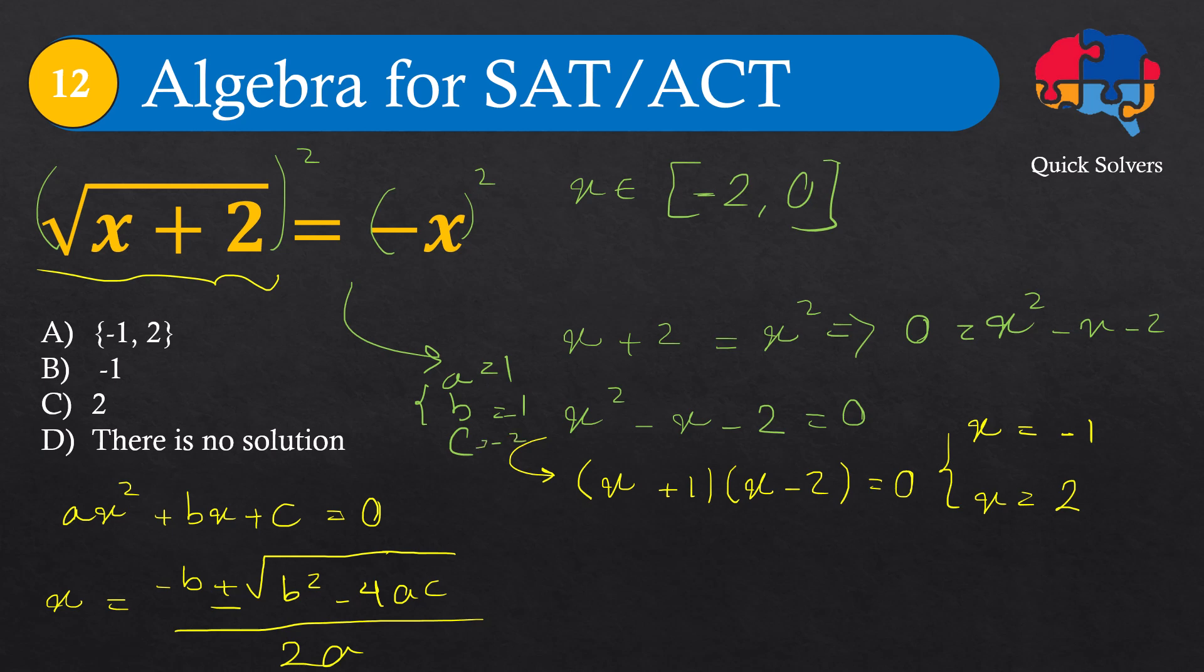Substituting these values, we get minus b which is 1, plus or minus the square root of b squared which is 1, minus 4 times a times c which is 8, all divided by 2a which is 2. This gives us 1 plus or minus square root of 9, which is 3, divided by 2. This again gives us two answers for x: 2 and minus 1.